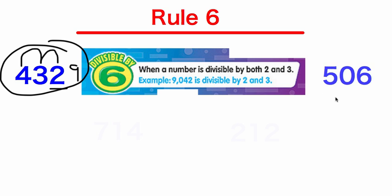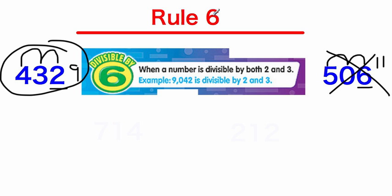Let's check another example: 506. Is 506 divisible by 2? It ends in an even number — it ends in 6 — so yes, it is divisible by 2. Is it divisible by 3? Adding the digits: 5 plus 0 is 5, plus 6 is 11. Can 3 evenly go into 11? No. So even though 506 is divisible by 2, it's not divisible by 3, and therefore it cannot be divisible by 6.